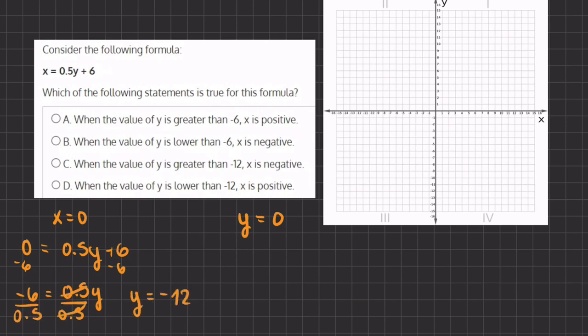So our first point is 0, negative 12 and let's plot that right over here on our graph. Now let's take a look at our second point when y equals 0. When y equals 0 we have x equals 0.5 times 0 plus 6. Now when we simplify we get x to equal 6.